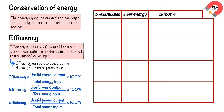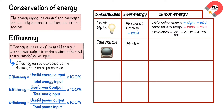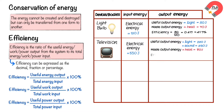Here are efficiency values for different devices. Light bulb: electrical energy input is 120 Joules, useful output energy is light of 50 Joules, and waste output energy is thermal of 70 Joules. Therefore, efficiency = 50 / 120 = 0.417, or 41.7%. Television: electrical energy input is 550 Joules, useful output energy consists of 220 Joules for light and 250 Joules for sound, and waste output is 80 Joules for thermal. Therefore, efficiency = 470 / 550 = 0.855, or 85.5%.